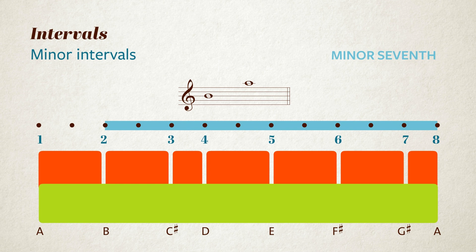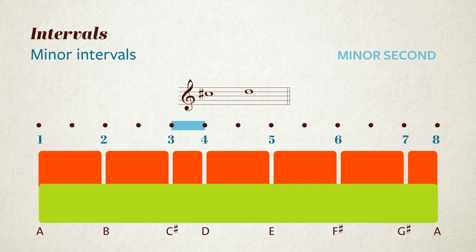In my video on the major scale, we found semitones between the third and fourth notes of the major scale, in this case, C sharp to D, and between the seventh and eighth notes, which here are G sharp and A. Now those intervals are also a second, but they're a semitone smaller than a major second, so we call them a minor second.